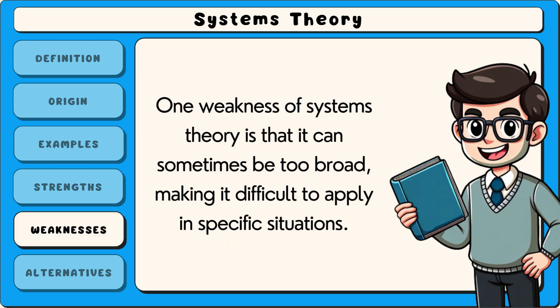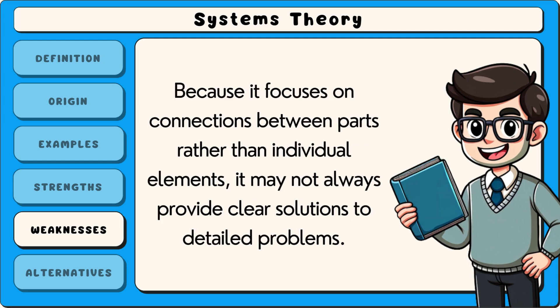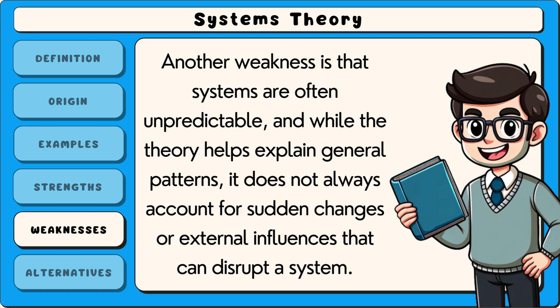One weakness of systems theory is that it can sometimes be too broad, making it difficult to apply in specific situations. Because it focuses on connections between parts rather than individual elements, it may not always provide clear solutions to detailed problems. Another weakness is that systems are often unpredictable, and while the theory helps explain general patterns, it does not always account for sudden changes or external influences that can disrupt a system.